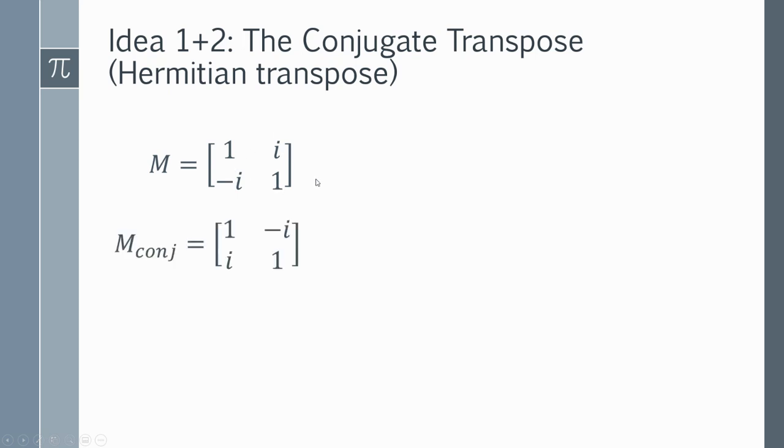...we could find the complex conjugate of that matrix. So we just switch i to minus i and then minus i to i. So we just switch the signs of those. Then we find the transpose. So this row becomes a column. This row becomes a column. We now have the complex conjugate transpose.